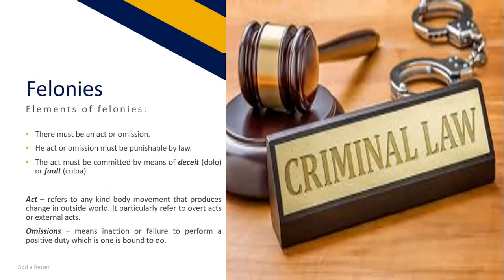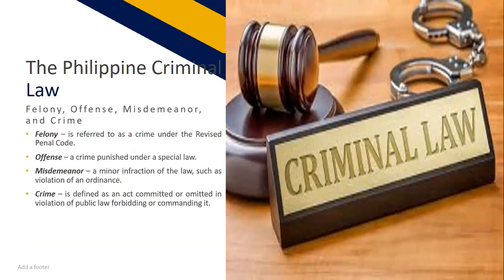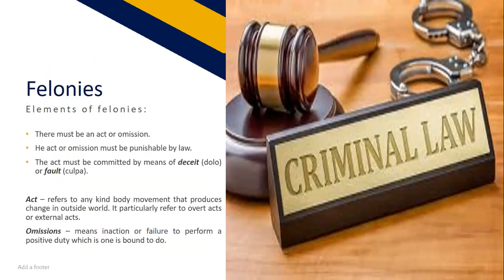The elements of felonies: felonies are acts and omissions punishable by law. The elements are: there must be an act or omission; the act or omission must be punishable by law; and the act must be committed by means of dolo or deceit, or culpa or fault. An act refers to any kind of bodily movement that produces change in the outside world, particularly referring to overt or external acts — some physical activity or deed indicating the intention to commit a particular crime. Omission is the inaction or failure to perform a positive duty which one is bound to do. An example of omission is abandonment of a person in danger.